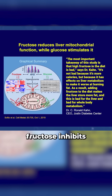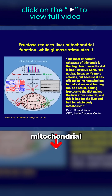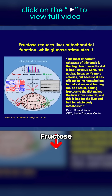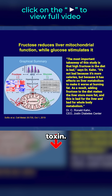Fructose inhibits beta-oxidation. The whole goal is to increase mitochondrial beta-oxidation. Fructose inhibits it. Sugar is a mitochondrial toxin.